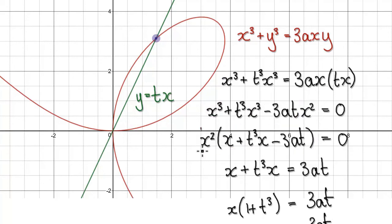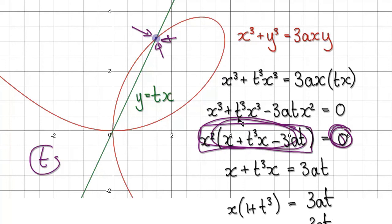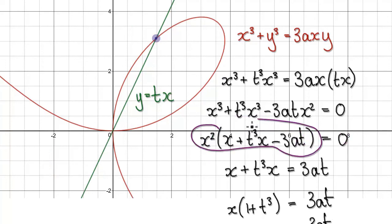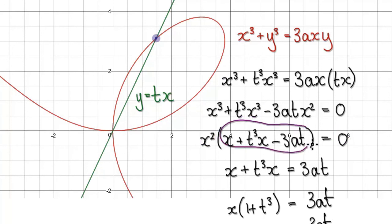We are trying to make this whole expression equal 0 — we are trying to find values of T where this whole thing equals 0. If we can find such values, that is us keeping track of that intersection point. At the moment you've got one thing multiplying another; if we can make this factor equal 0, then the whole thing will automatically be 0.